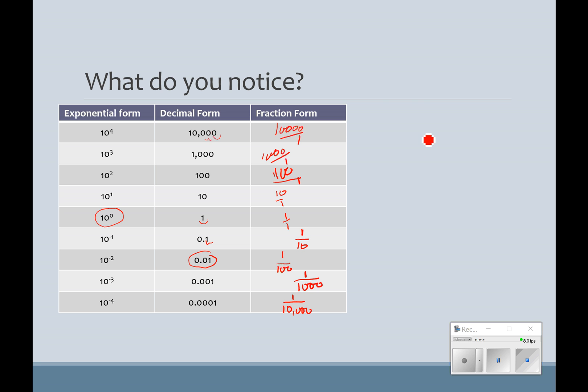What I want you guys to notice is, first of all, when I go to the zero power, we could do that with powers of two as well. If we go two to the fourth, two to the fourth is sixteen. Two cubed is eight. Two squared is four. And notice here, I'm dividing by two each time. Two to the first is two. Two to the zero is one.